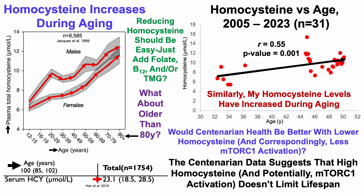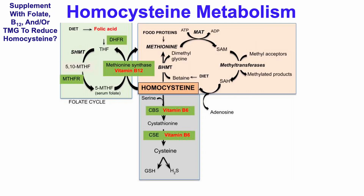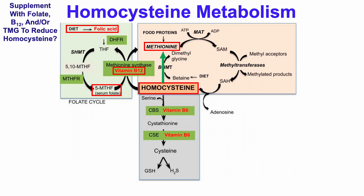What I commonly hear is that reducing homocysteine should be easy — just add folate, B12, and/or trimethylglycine. But let's take a look at homocysteine metabolism to see why I don't think that's the best strategy for longevity. Dietary folate is converted to serum folate and then, in the presence of vitamin B12, will convert homocysteine into methionine. Similarly, betaine or trimethylglycine — and note that choline also feeds into the betaine pathway — will combine with homocysteine to also form methionine. So folate, B12, and/or trimethylglycine should reduce homocysteine, but will result in an increase in methionine.